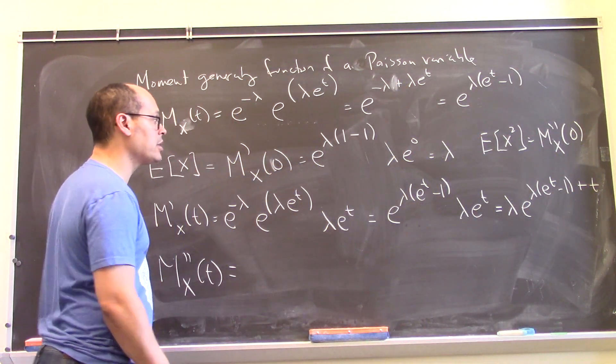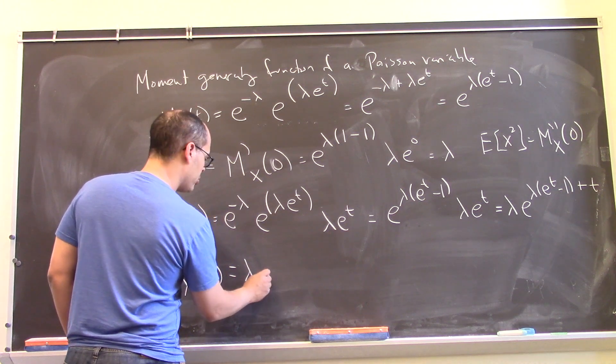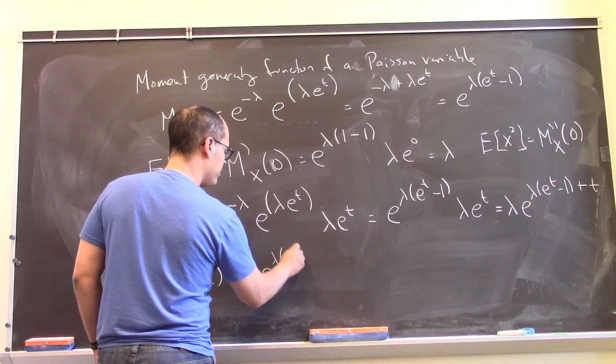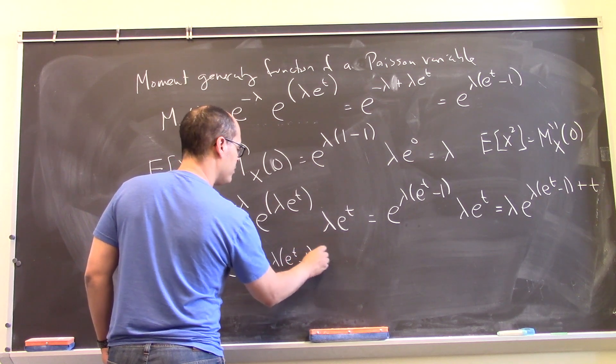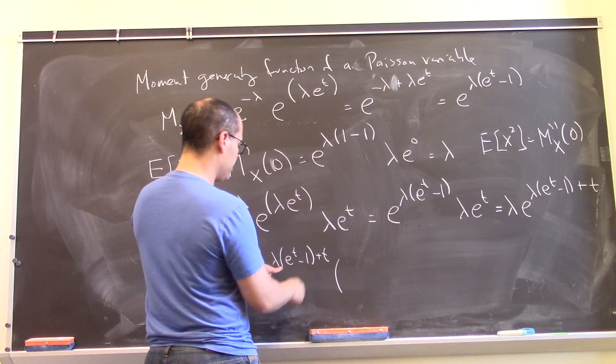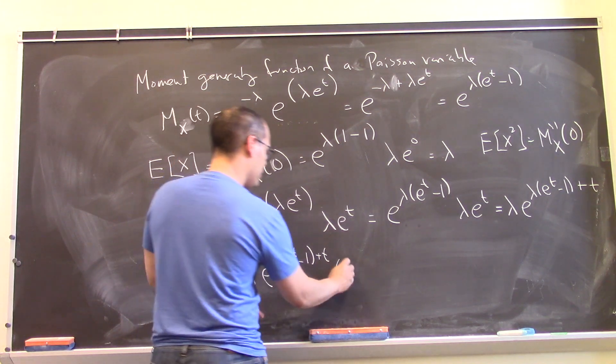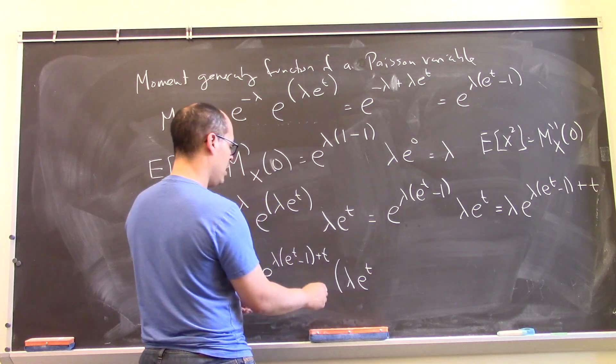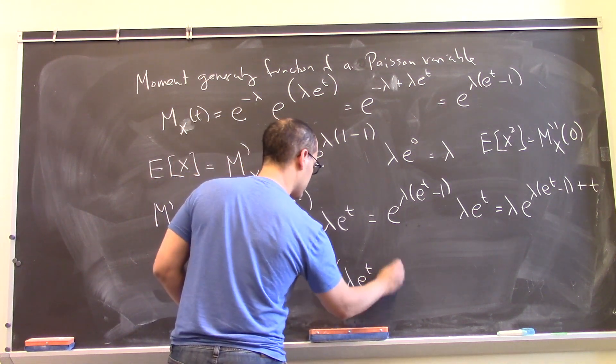So then the second derivative, we have a lambda. We have the derivative of this as itself times the derivative of what's upstairs, which is lambda times the derivative of this, which is just e to the t, plus the derivative of that, which gives me a 1.